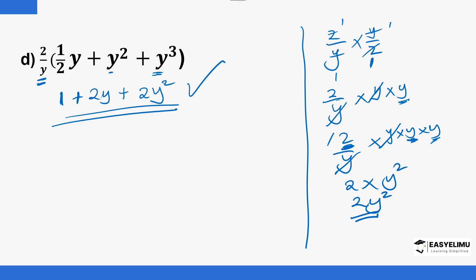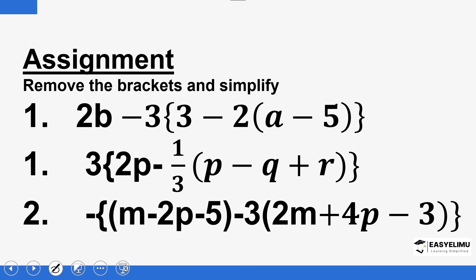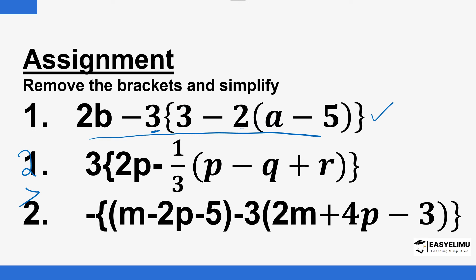Now we have practice questions to help us apply what we have learned. I will attempt the first one and then you will be able to attempt the rest — number two and number three. The three outside the bracket will multiply all the numbers inside, but first you have to simplify the inner bracket before opening the outer bracket. So the first step gives us 2b, then minus 3 into the result of 3 minus 2a — the 2 multiplies both terms inside, and the sign will change, giving 2a plus 10.